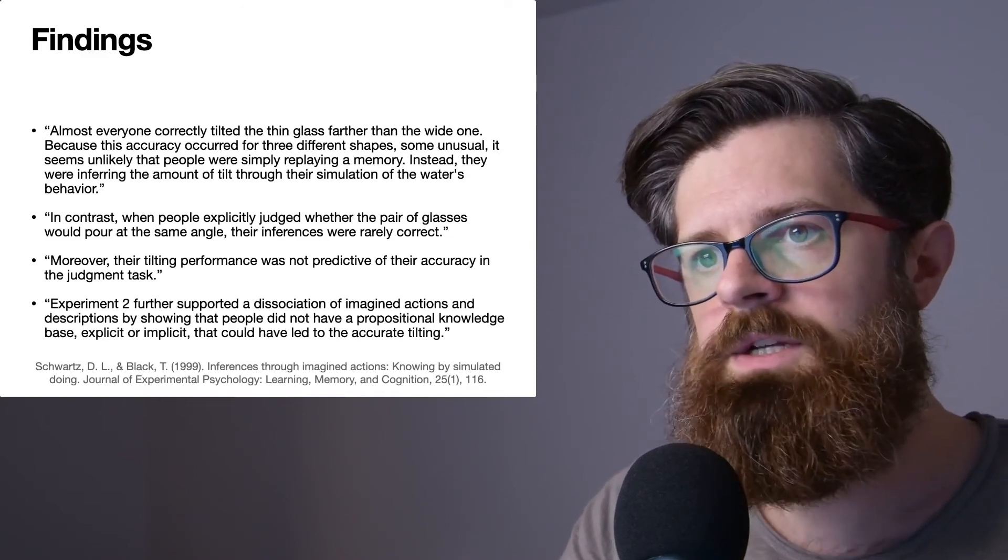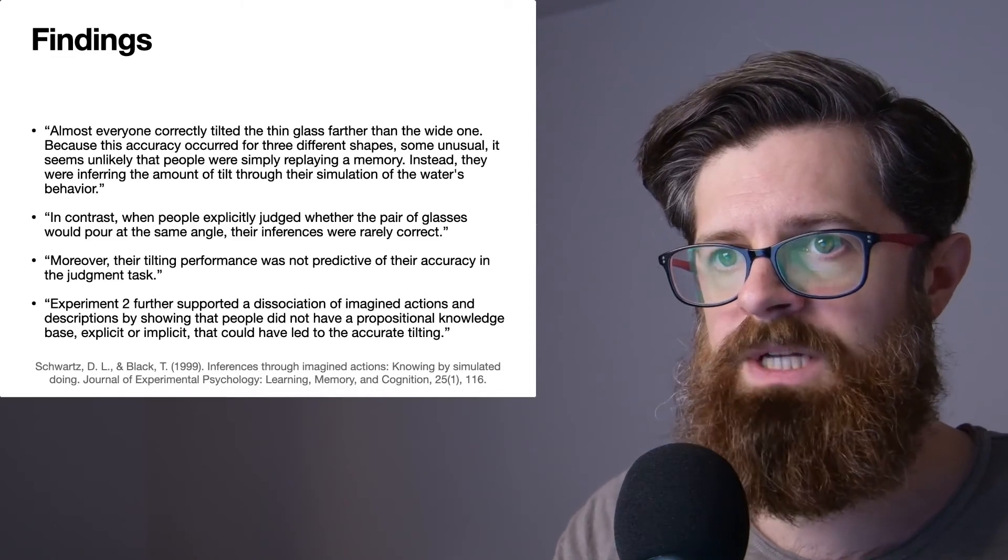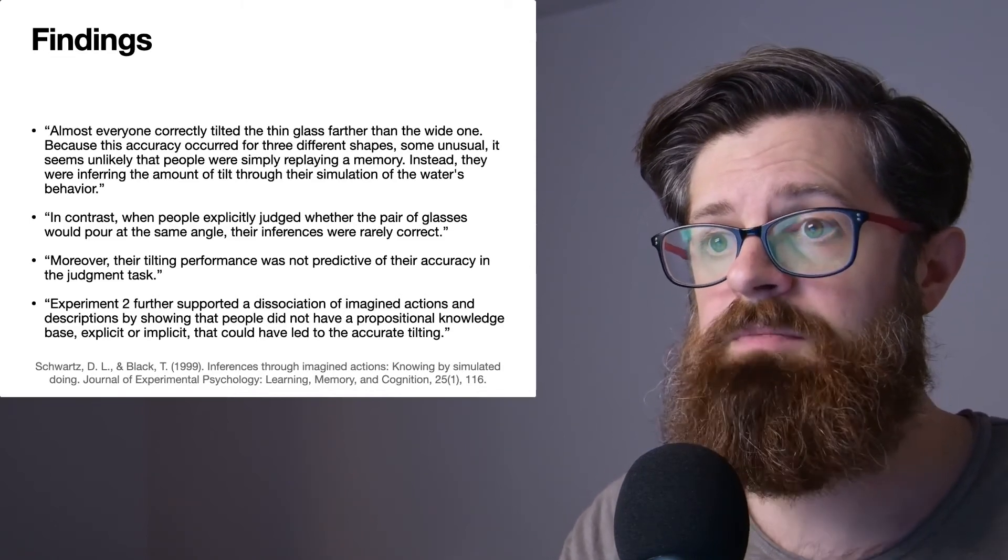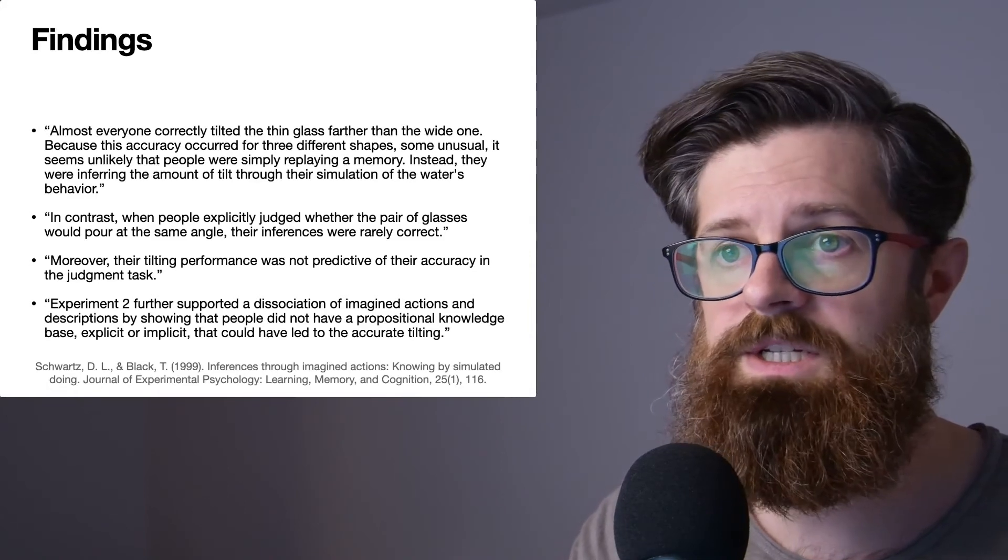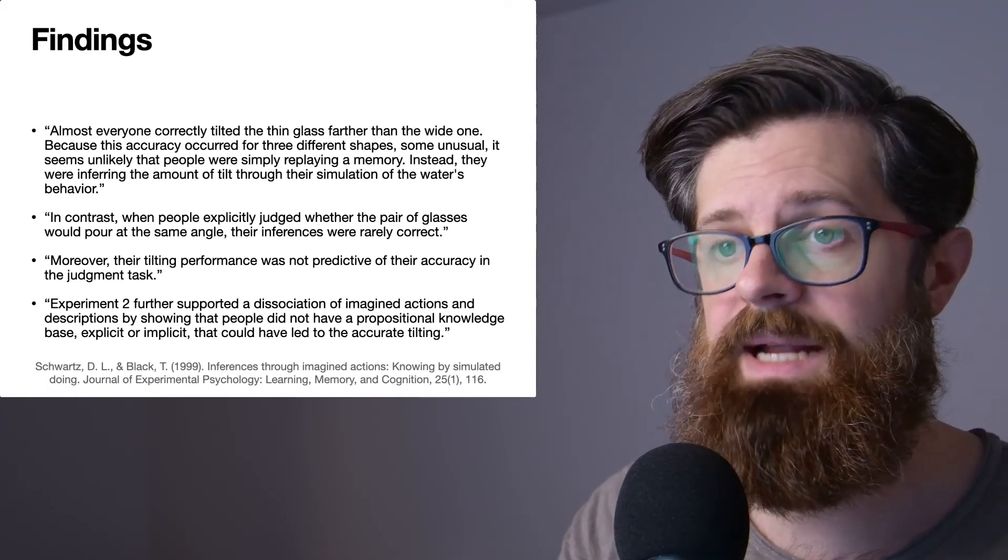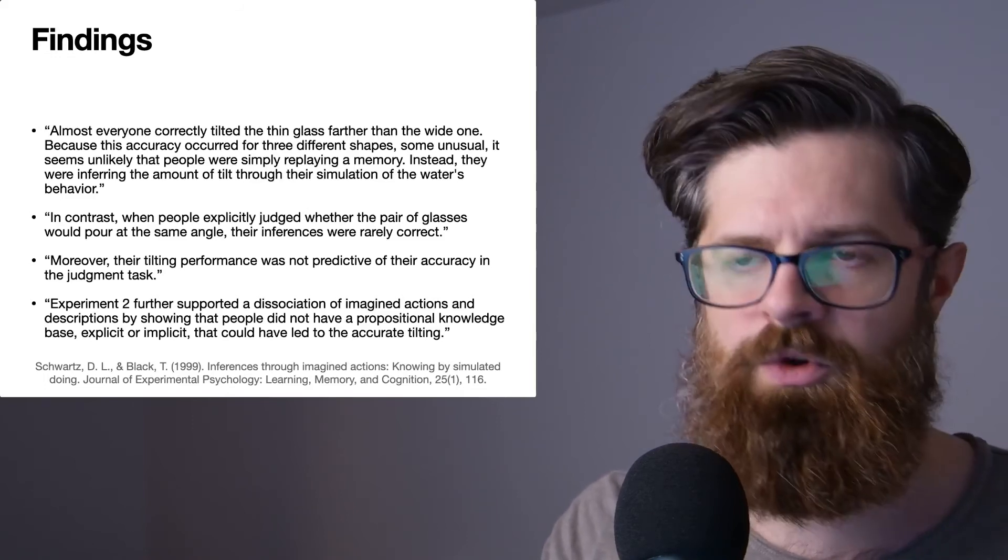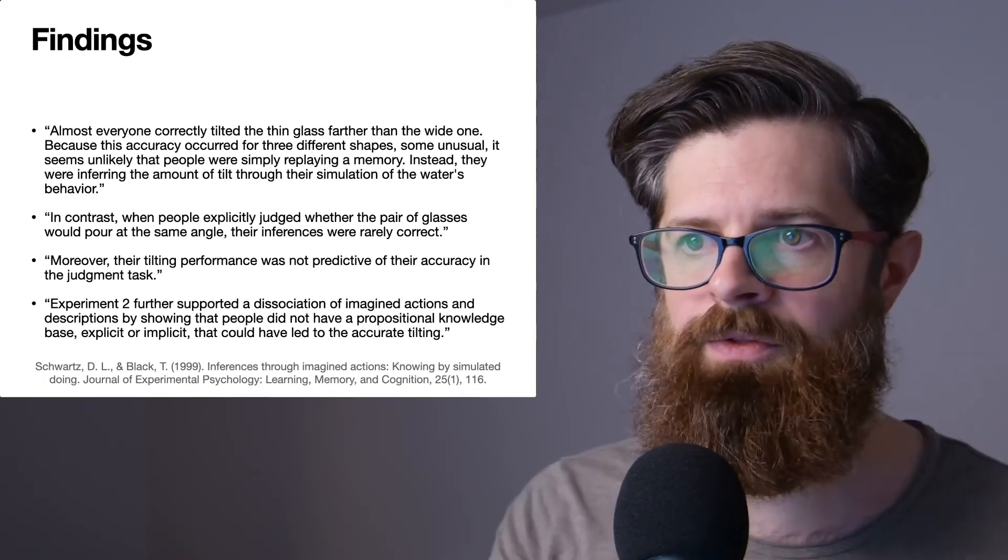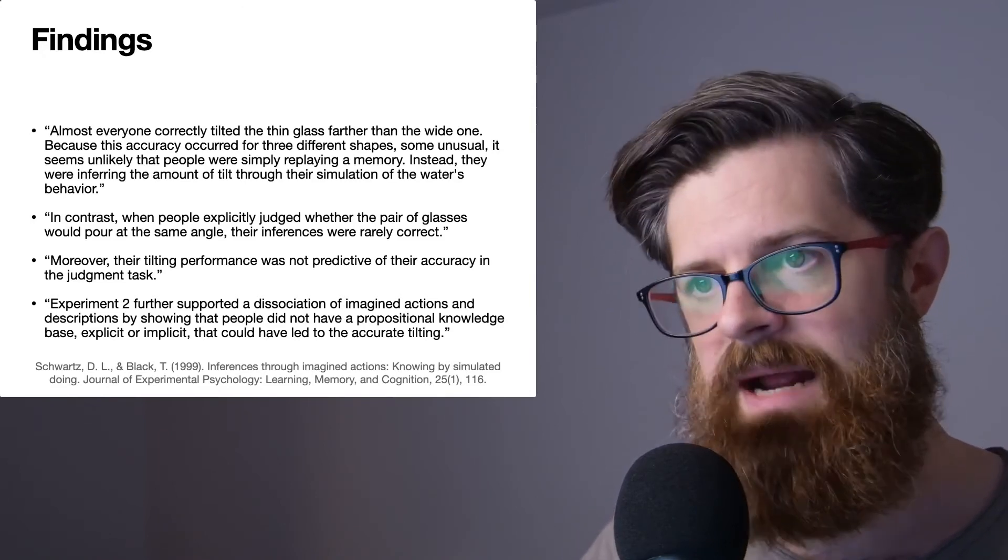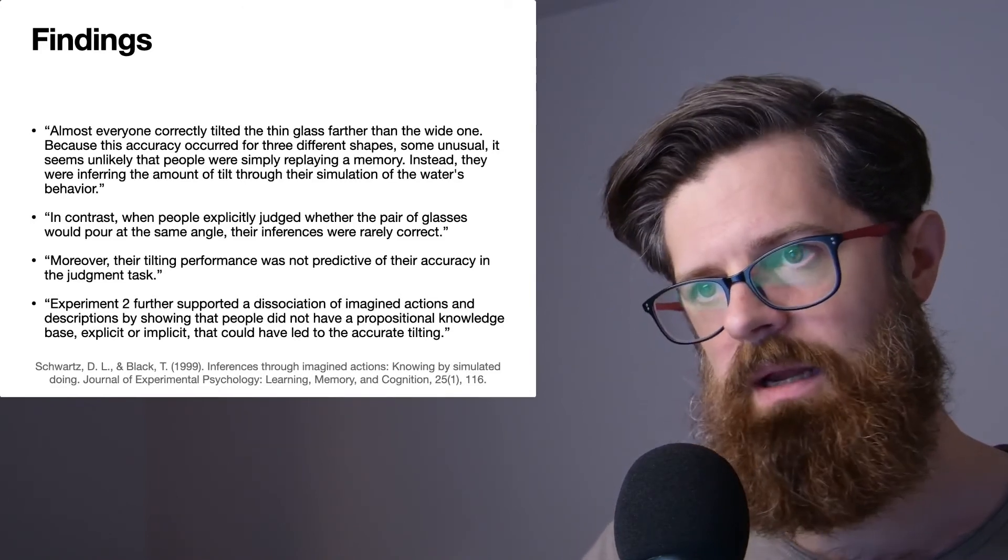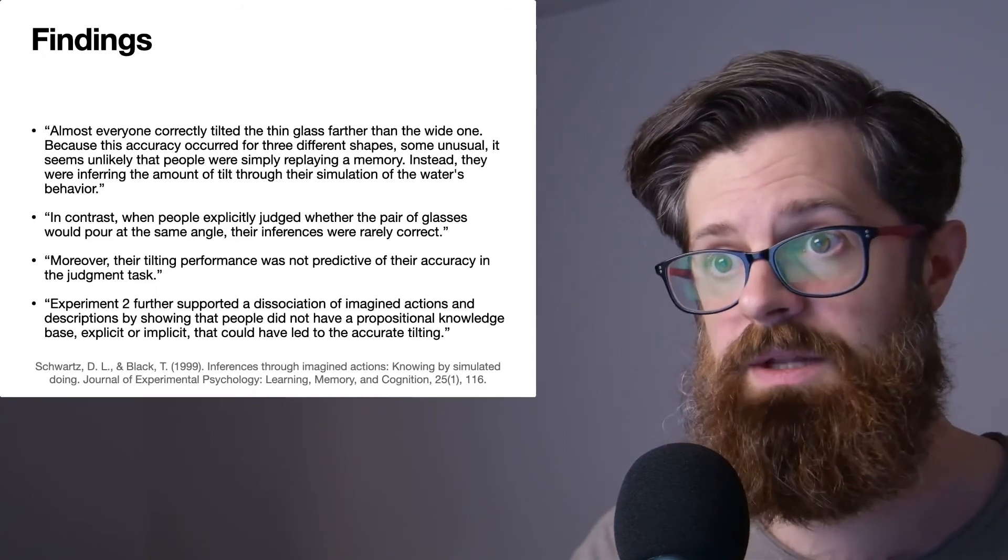Experiment two further supported a dissociation of imagined actions and descriptions by showing that people did not have propositional knowledge, a propositional knowledge base explicit or implicit, that could have led to the accurate tilting. So this is essentially trying to rule out the idea that people are actually solving this problem through propositional knowledge, through symbol manipulation, and that the mental simulation is some kind of weird side affair. What they're actually saying is that they're establishing evidence for mental simulation being a real thing, separate to propositional knowledge and symbol manipulation, that kind of approach.